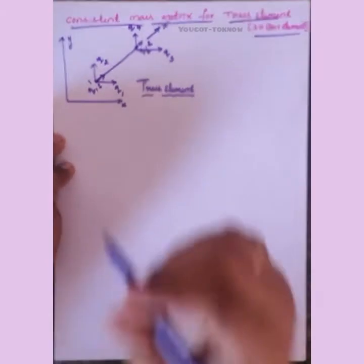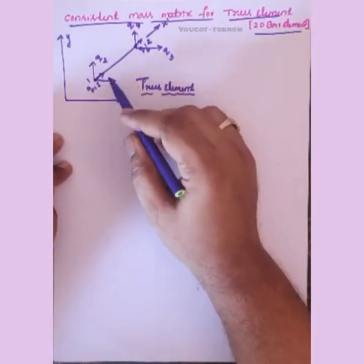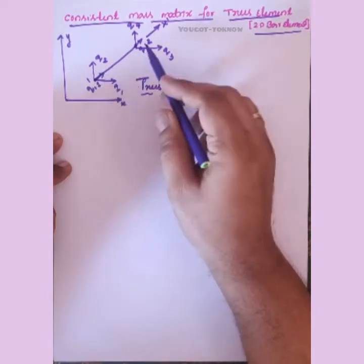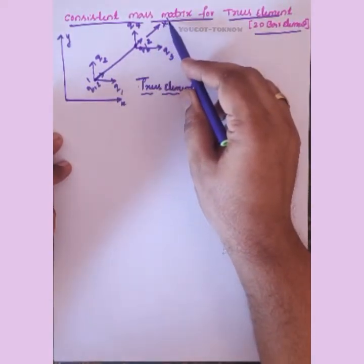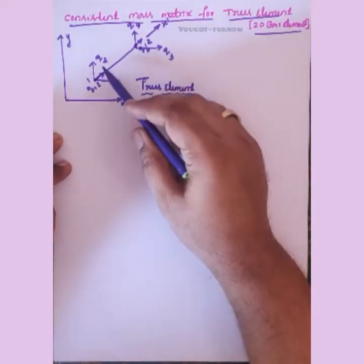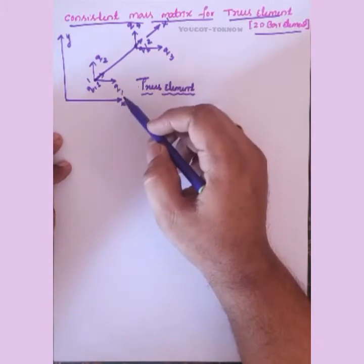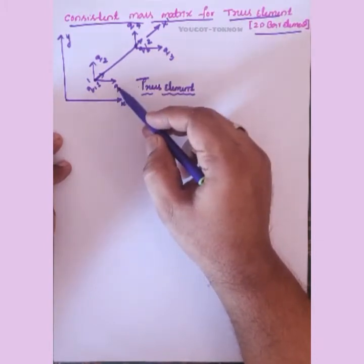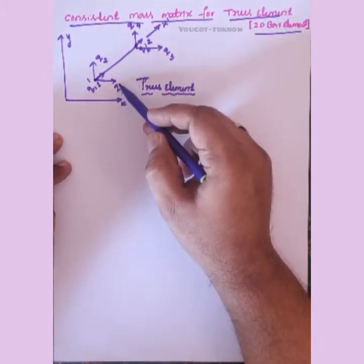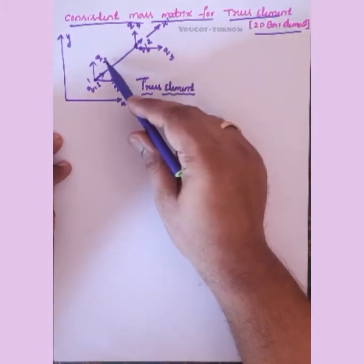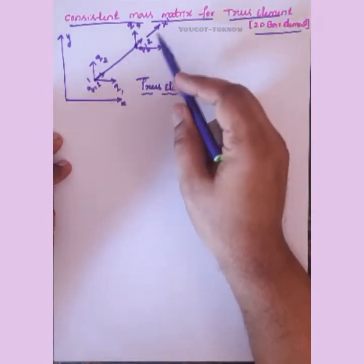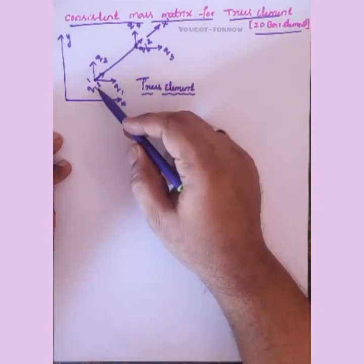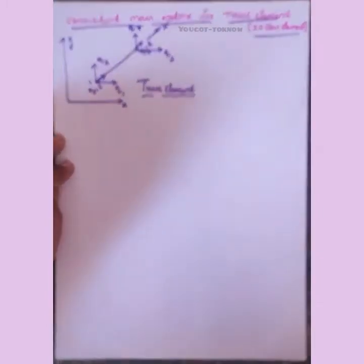To derive it, first construct your truss element having two nodes, one and two. In global axis x and y, if you take local axis x-dash, the displacements at each node will be two: q1 and q2 at node 1, q3 and q4 at node 2. If you take local axis, the displacements will be only one at each node: q1-dash and q2-dash.